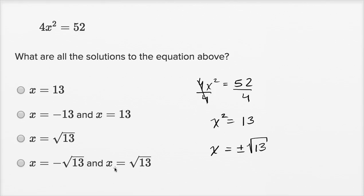So the two solutions are: x is the negative square root of 13, and x is equal to the positive square root of 13. So that's our choice right over there.